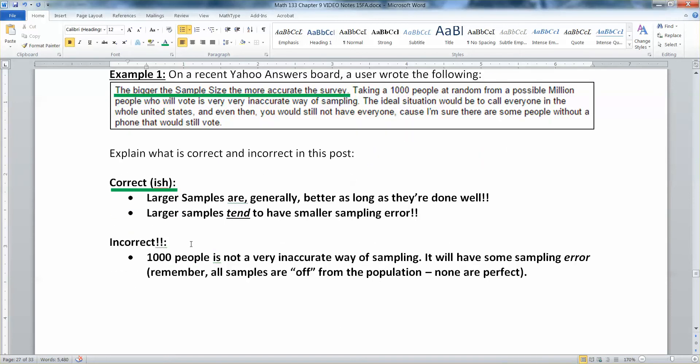So now what's incorrect, which is everything else. A thousand people is not a very inaccurate way of sampling necessarily. It depends on what they mean by inaccurate. If they mean a bad way of sampling that's not true. If they mean that it has sampling error, well that is true but all samples have sampling error.